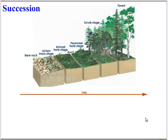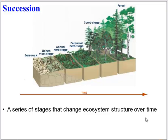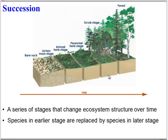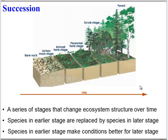Succession basically consists of a series of stages that change the ecosystem over time. The first stage of organisms and abiotic factors changes the ecosystem and makes it possible for a new set of organisms to live there. Those organisms then change the ecosystem, making it possible for yet another group to move in. Finally, we arrive at our climax community, which is the stable community in an ecosystem. Species in an earlier stage are replaced by species in a later stage, because the earlier species made the community better.